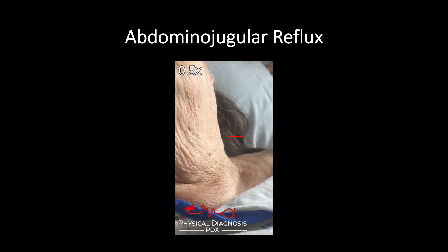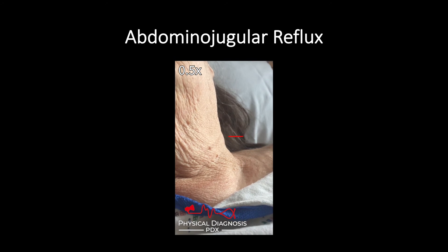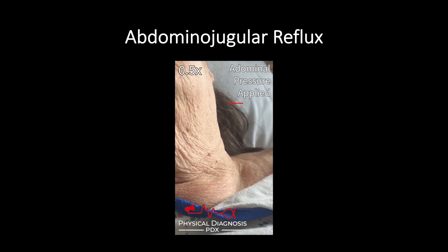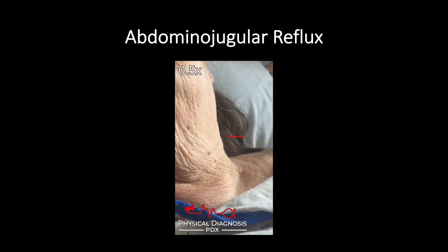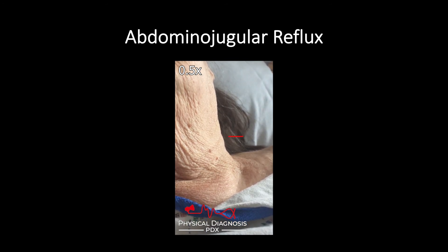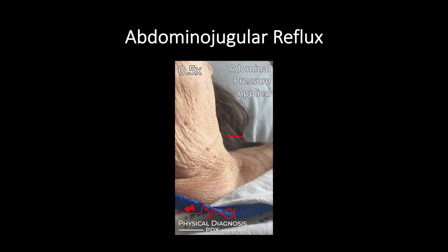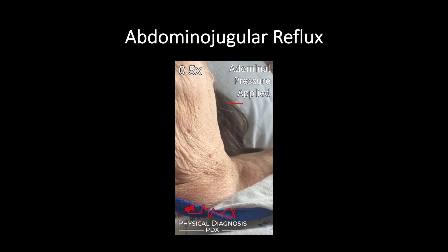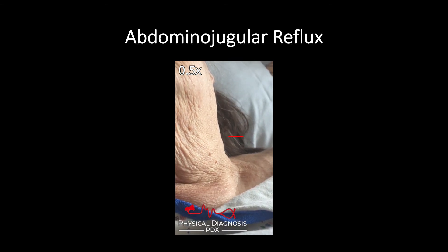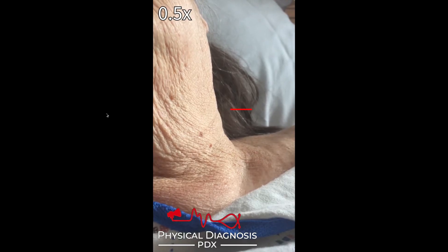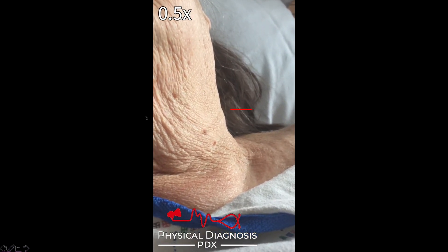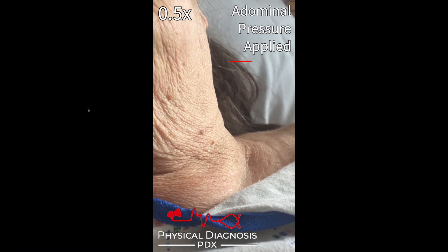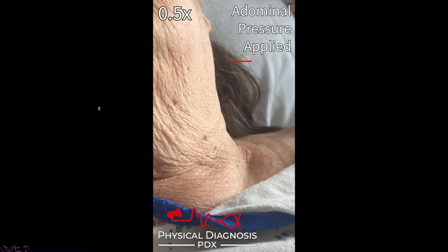We mentioned abdominal pressure — this is a physical exam maneuver where you put pressure on the patient's abdomen and evaluate the effect on the jugular venous pulse. One key application is helping to identify the JVP: if I see movement in the neck and put pressure on the patient's abdomen and that pulse moves up the neck, I'm pretty confident that's a venous pulse. Here it is in action — with abdominal pressure applied, you'll see that movement climb up the neck toward the angle of the jaw.